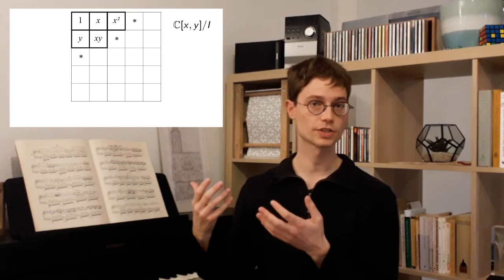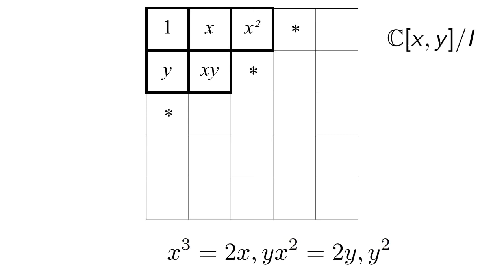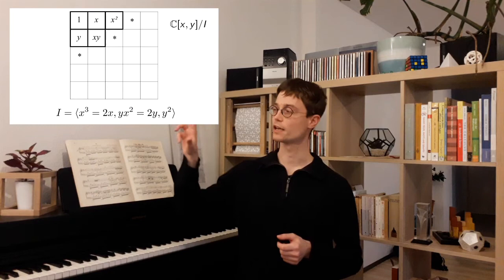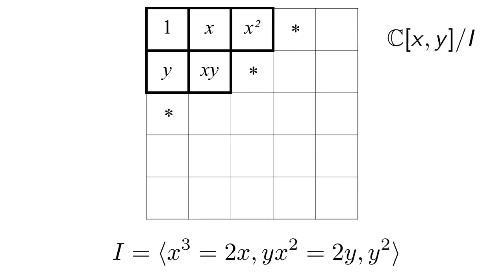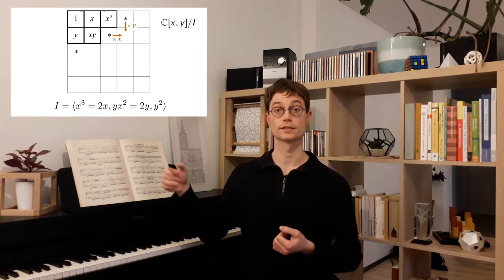At the end of each row there will be a star corresponding to some relation. For example: in the first row, 1, x, and x² are linearly independent, and the first relation encountered is x³ equals 2x. Then I go to the second row and add y and xy to my basis, encountering the relation yx² equals 2y. Then in the third row, immediately I get the relation y² equals 0. These three relations give me an ideal. There is a compatibility condition: when you take two relations and multiply one by a power of x and the other by a power of y, you should not get a new relation — it should be generated by the existing ones.